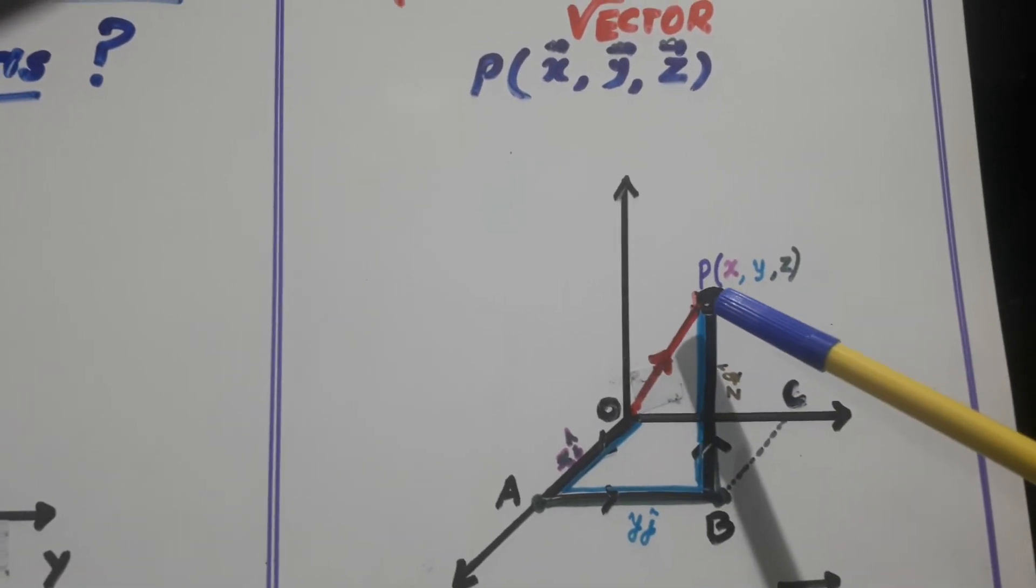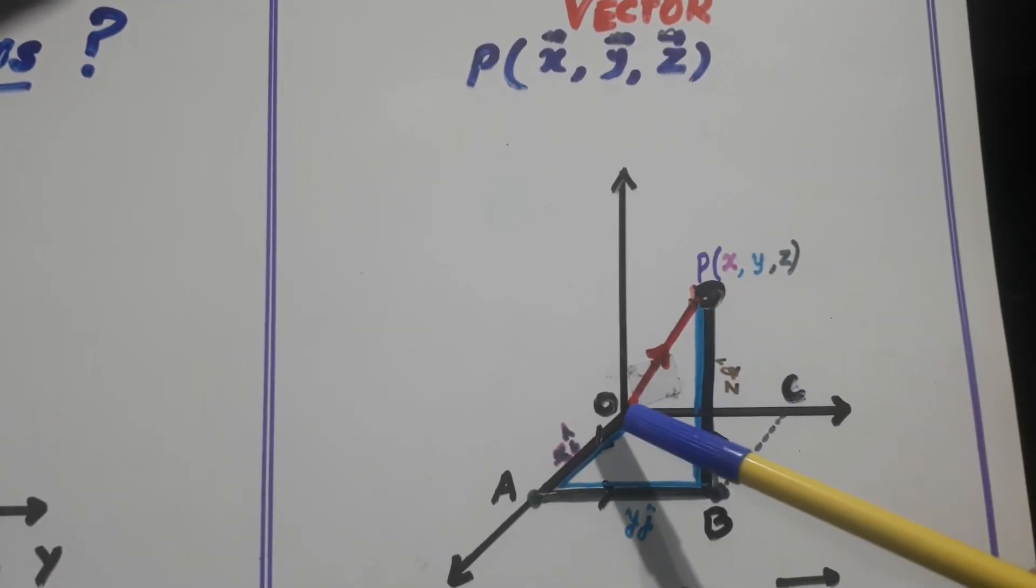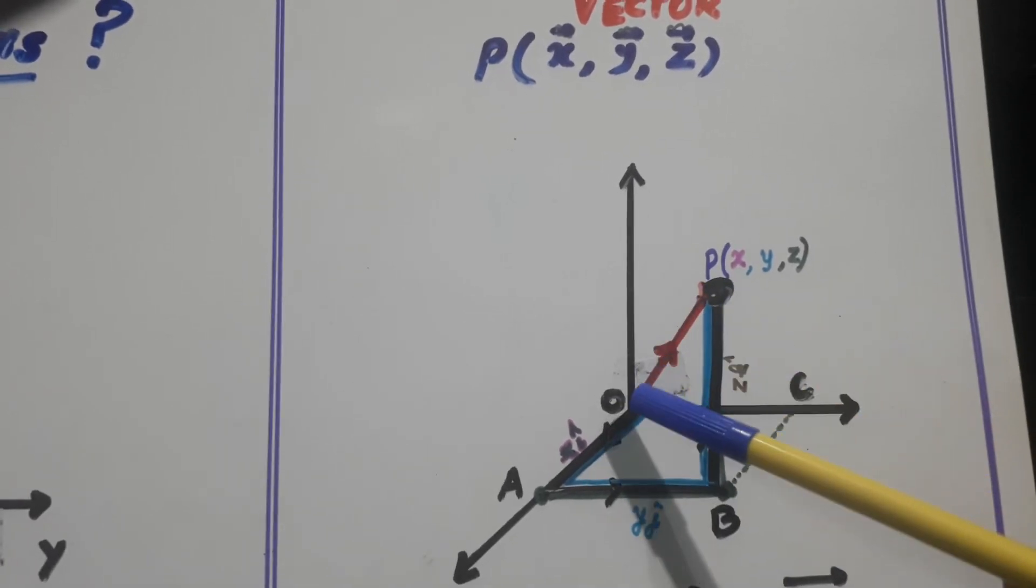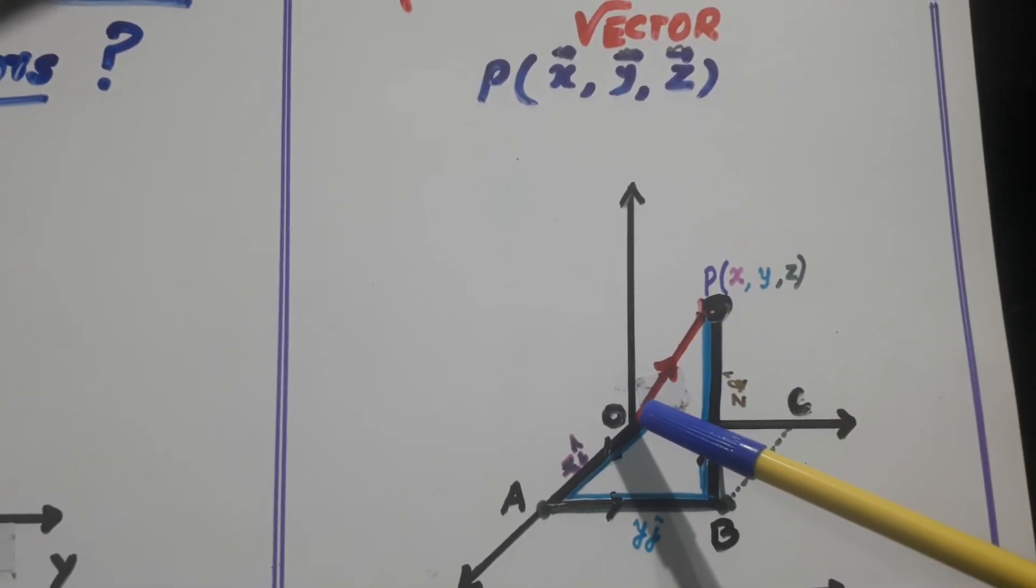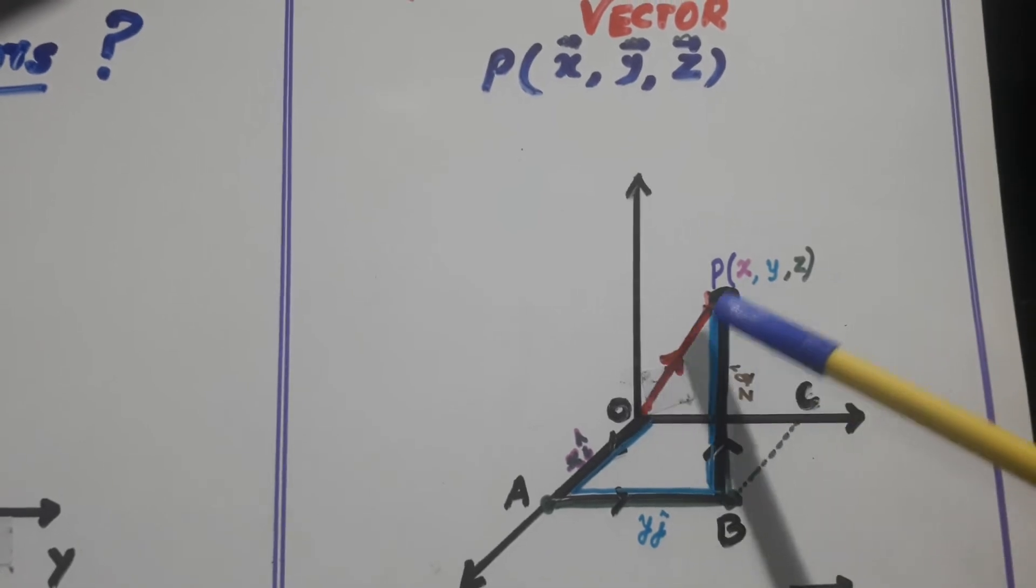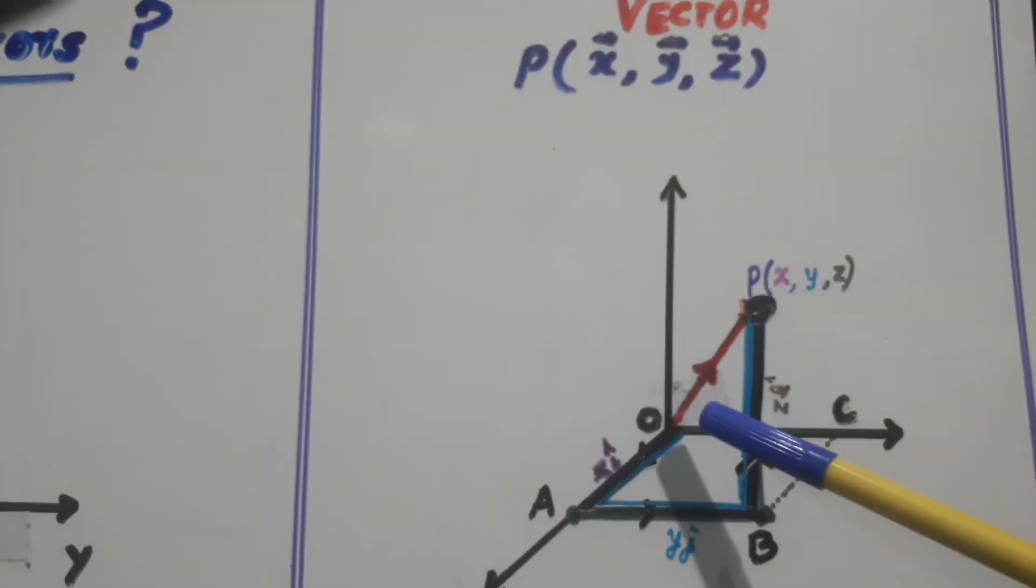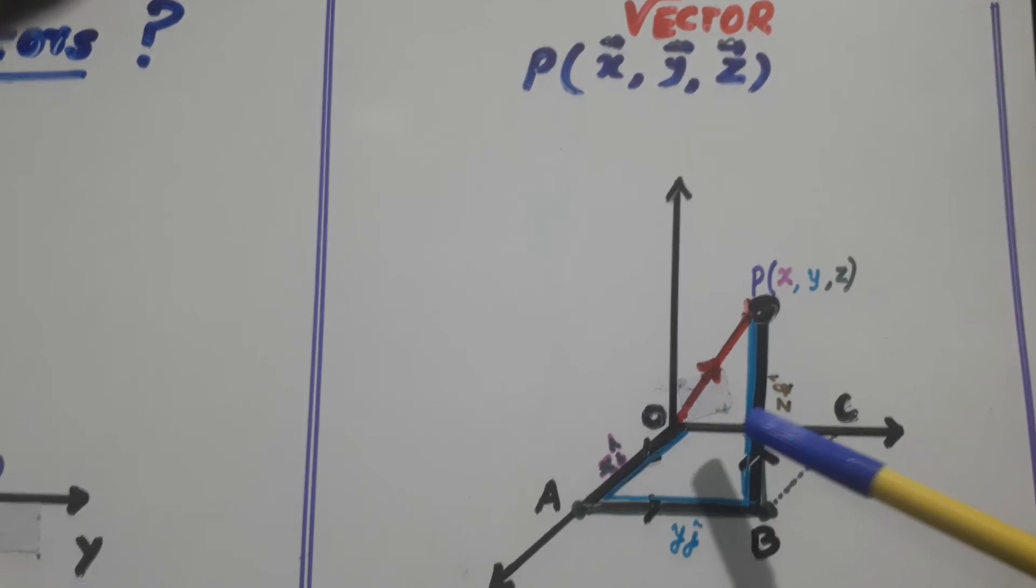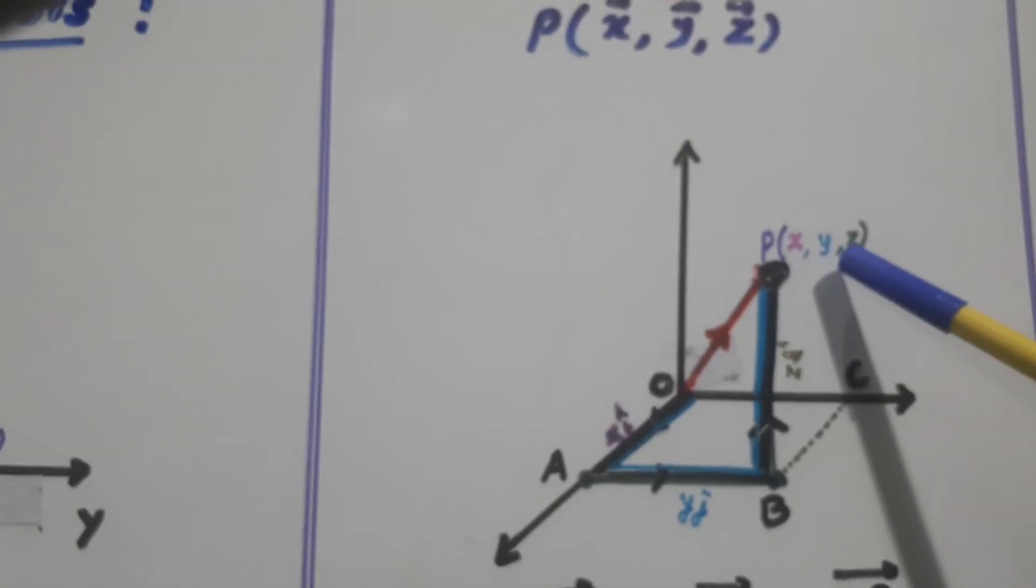When you want to make this point as a position vector, you have to join it with the origin. So any vector starting from the origin is the position vector. So this OP is the position vector. Its coordinates are x, y, z.